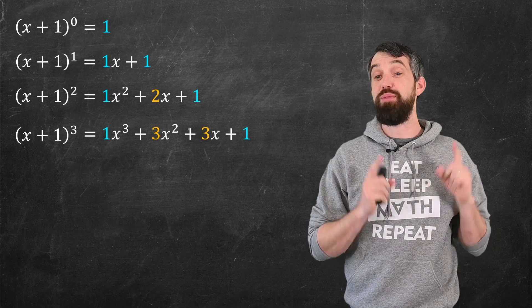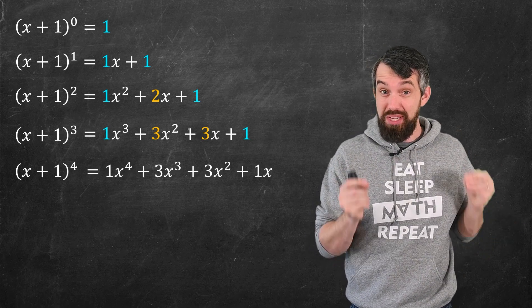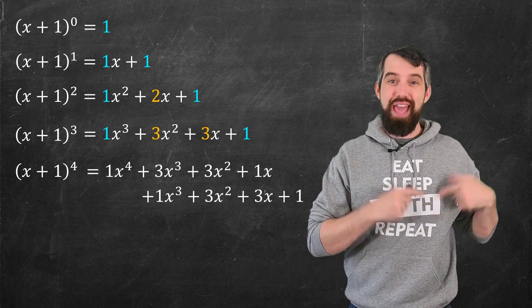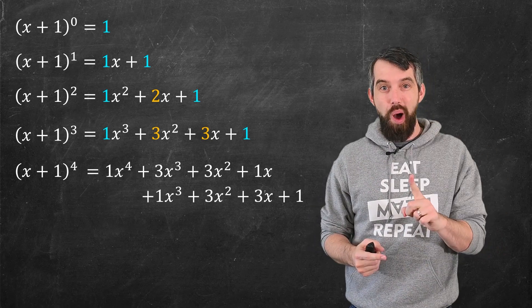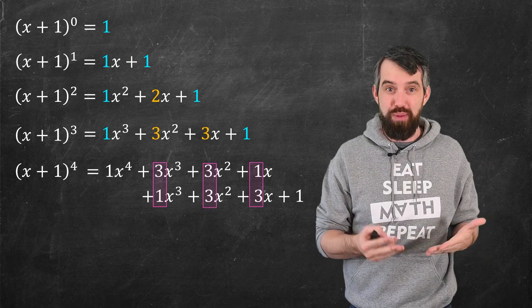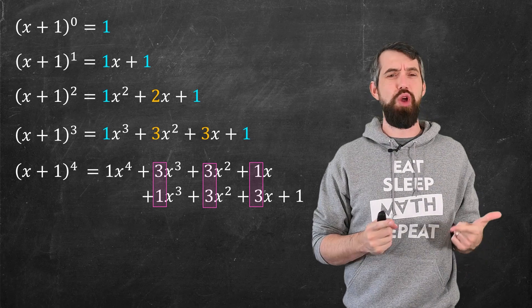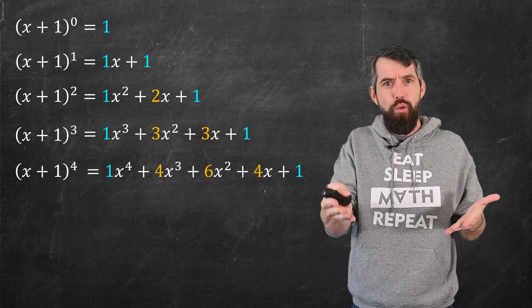So let's do it one more time just to see the pattern x plus 1 to the 4th. I'll multiply everything that we had for x plus 1 cubed times an x. Then I'm going to multiply everything from x plus 1 cubed just times 1. I add them together in the same way, and you see that for the like terms, you have a 3 plus 1, a 3 plus 3, another 1 plus 3. And this gives me this pattern with coefficients 1, 4, 6, 4, 1.